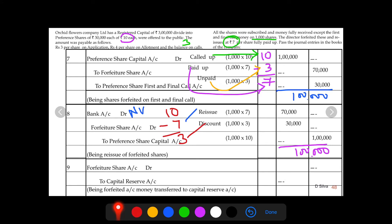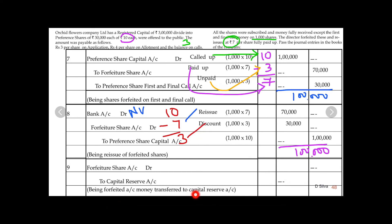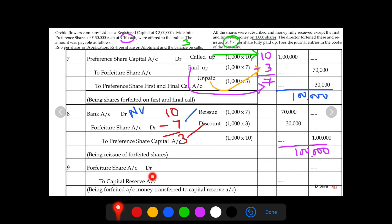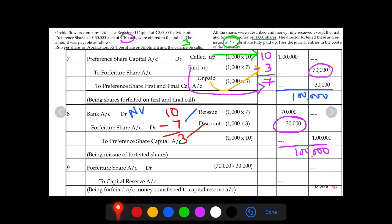We now transfer the forfeited amount — the capital gain — to capital reserve account. The entry is: forfeited share account debit to capital reserve account. The calculation: forfeited share account had rupees 7,000 credited, and rupees 3,000 debited in the reissue entry. So 7,000 minus 3,000 gives a capital gain of rupees 4,000, which is transferred to capital reserve — rupees 4,000 debited and credited.